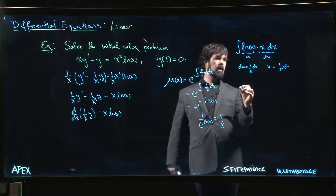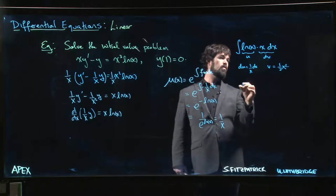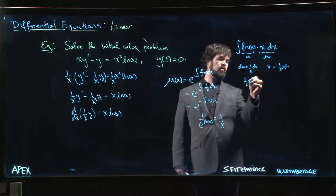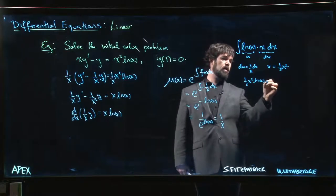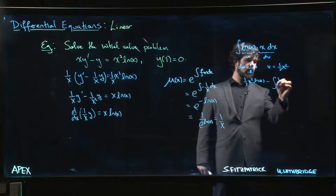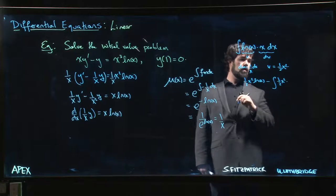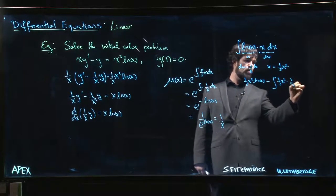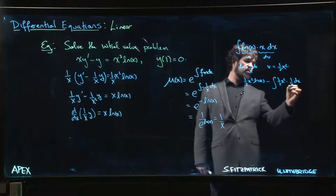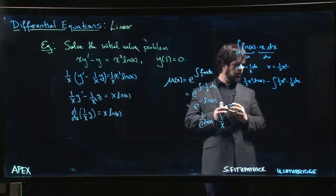So uv is going to be (1/2)x² log x minus (1/2)x². There's v, here's du: 1/x dx. Cancel those. We have just (1/2)x.